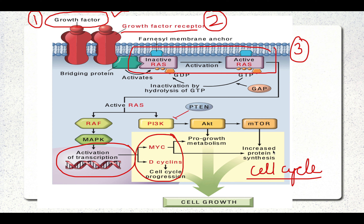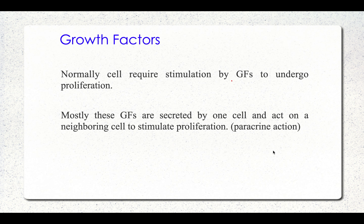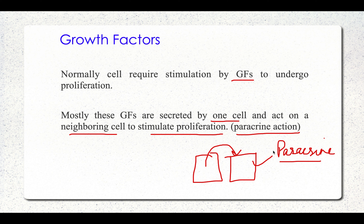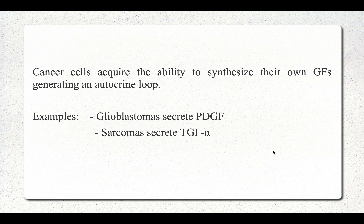Normally, cells require stimulation by growth factors to undergo proliferation. Most growth factors are secreted by one cell and act on a neighboring cell — this is paracrine action. In neoplasia, an autocrine phenomenon takes place: cancer cells acquire the ability to synthesize their own growth factors, generating an autocrine loop. Examples include glioblastomas, a CNS tumor that secretes PDGF, and sarcomas, which secrete TGF-alpha.